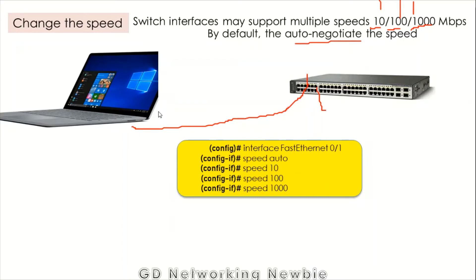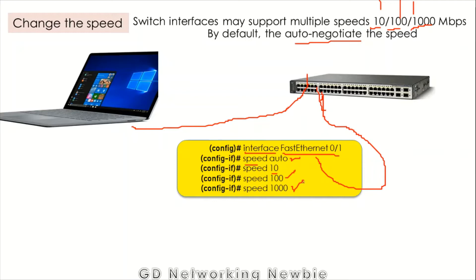To configure speed, we first go from global configuration mode to interface mode using the interface command, specifying which interface we want to configure — for example, fast ethernet 0/1. Then we use the speed command. Options are: auto (auto-negotiate, which is the default), 10, 100, or 1000 megabits per second. Using this speed command, we can set the speed of any port on a switch.